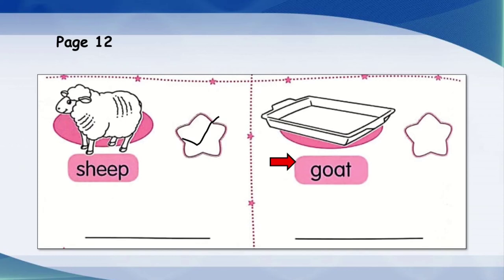Goat. Does the picture show a goat? No, that's not a goat. So what should you do? Yes, you cross it out. What is the correct word for the picture? Excellent. Yes, it's a tray. T-R-A-Y. Tray.